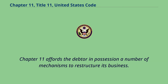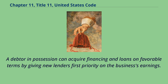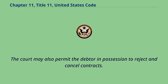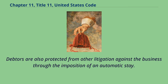Chapter 11 affords the debtor in possession a number of mechanisms to restructure its business. A debtor in possession can acquire financing and loans on favorable terms by giving new lenders first priority on the business's earnings. The court may also permit the debtor in possession to reject and cancel contracts.